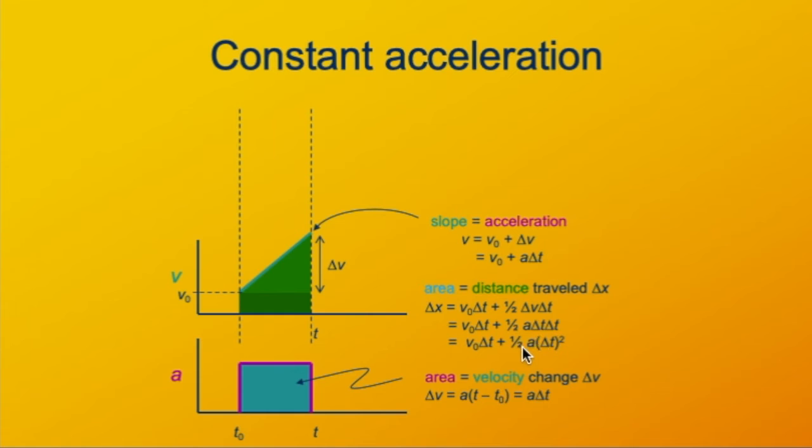Δv is a Δt, so we can substitute that in. And then we see we have Δt twice in this term, so that's a square term. Our Δx formula has a linear term in Δt and a quadratic term in Δt.